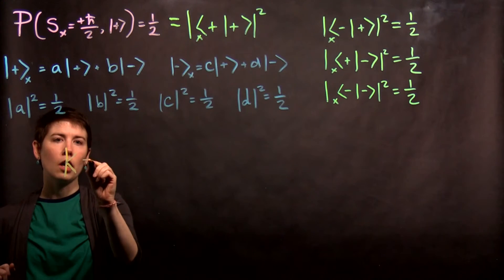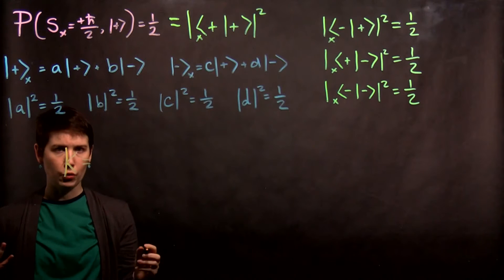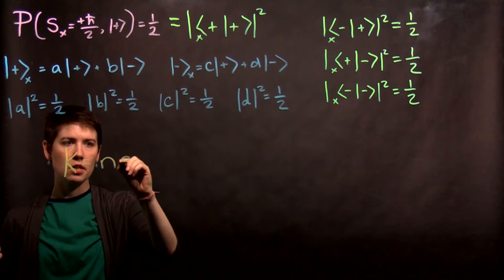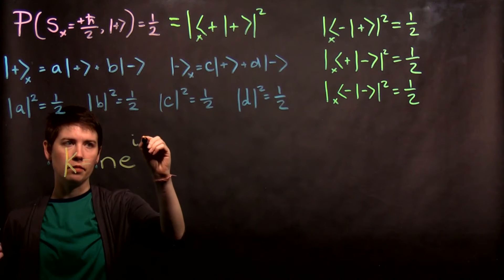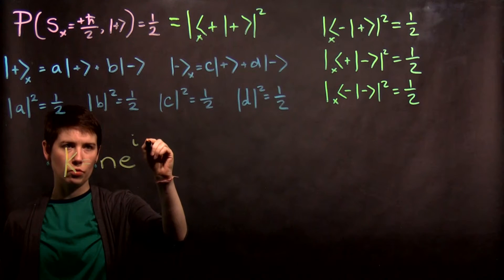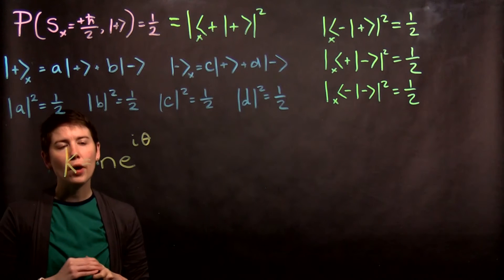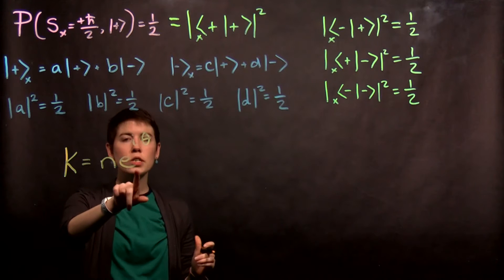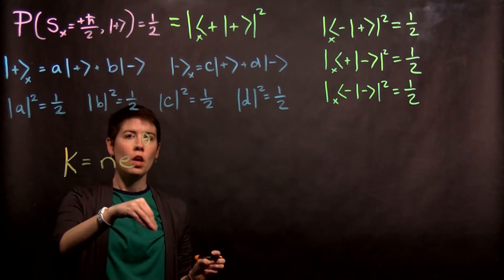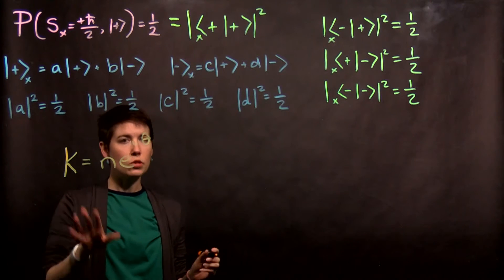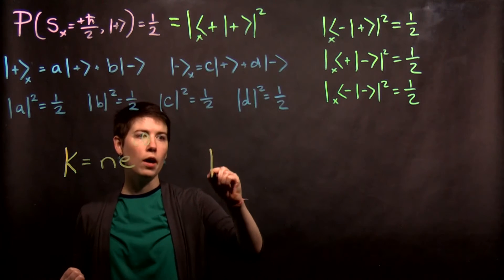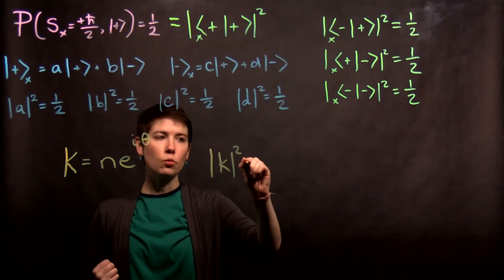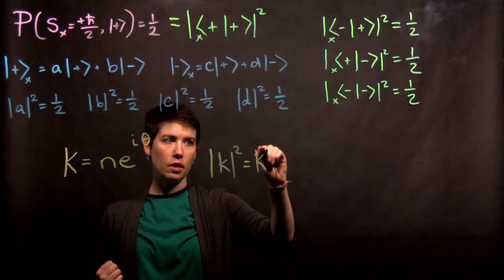and let's say that k is equal to n e to the i theta. And so, this is a way of representing complex numbers. And the idea here is that we're going to call this a phase. And the reason that I'm writing it out this way is that we can then ask what the magnitude k squared is equal to. So, again, we've learned that this can be written as k star k.